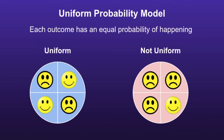Uniform Probability Model: in a Uniform Probability Model, each outcome has an equal probability of happening. You can see in the blue spinner, that would be a Uniform Probability Model because there is an equal chance of landing on the Happy Smiley Face and the Sad Smiley Face. But on the right in the red spinner, that would not be a Uniform Probability Model because there is not an equal chance of landing on the Happy Smiley Face and the Sad Smiley Face.